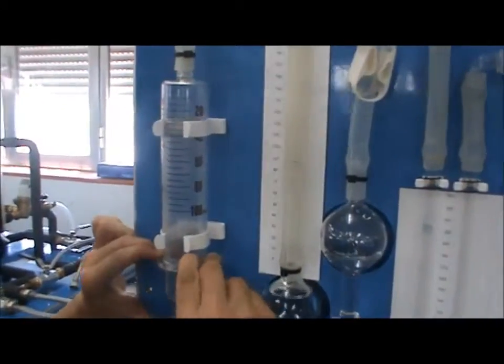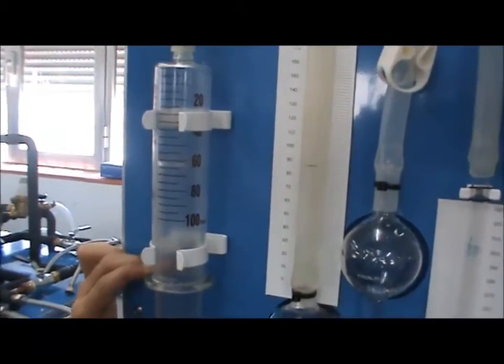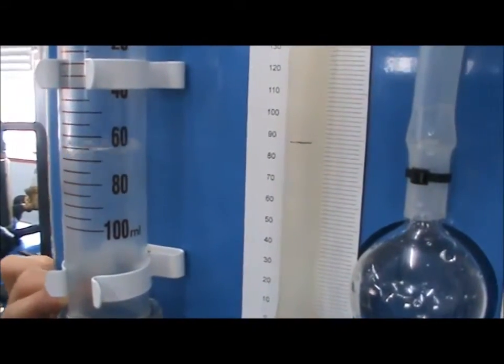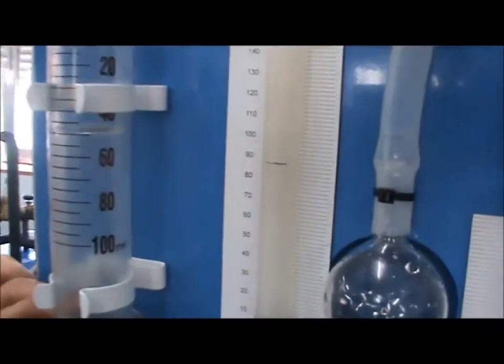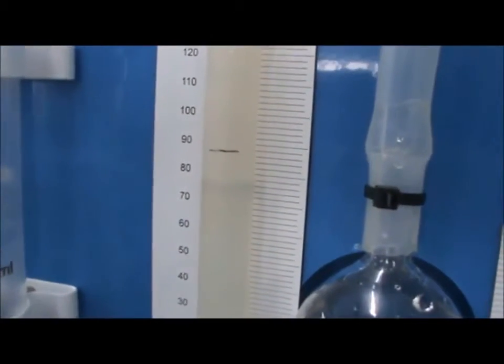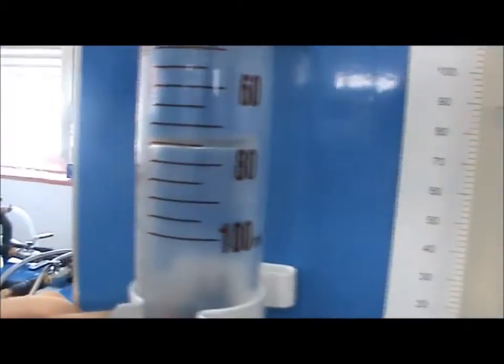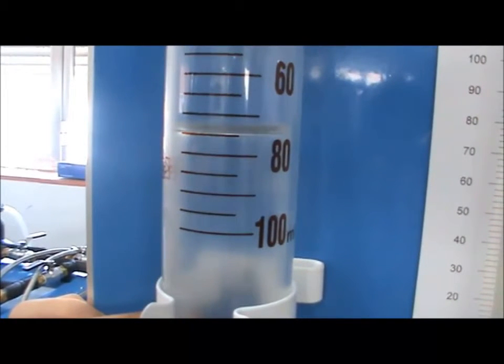Continue this process until you are able to easily compress the plunger, and the volume reduction in the syringe is constant. Now the absorption by the KOH solution is complete. Pull the plunger down to bring the solution to the marked level, and carefully measure the value shown on the syringe. In this experiment, the KOH solution absorbed 25 mL of CO2.